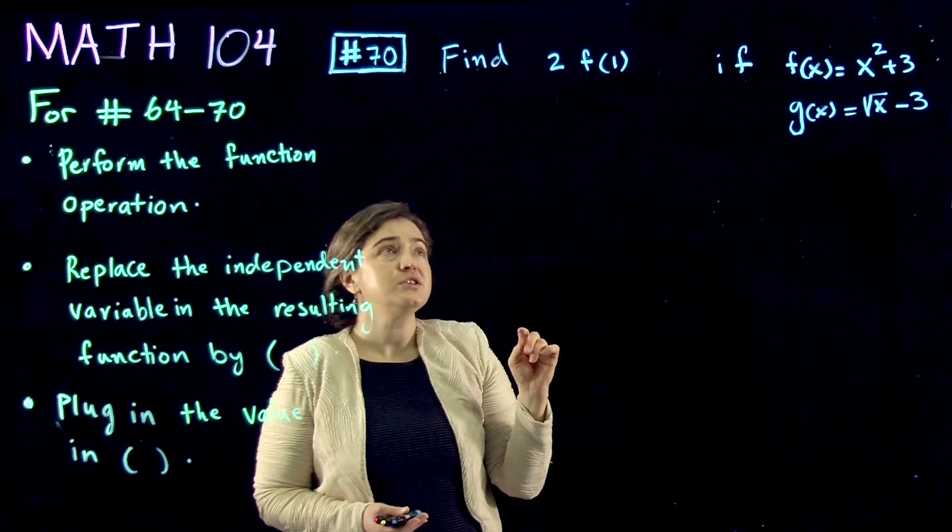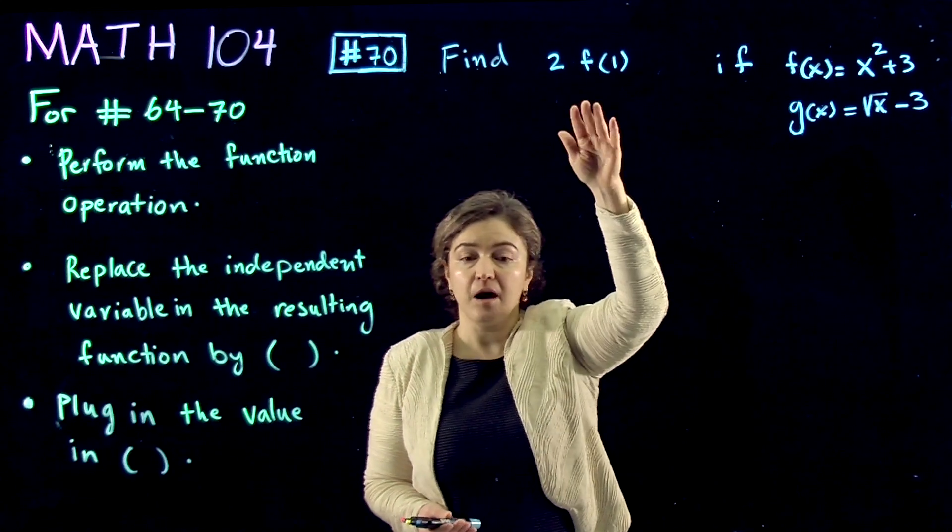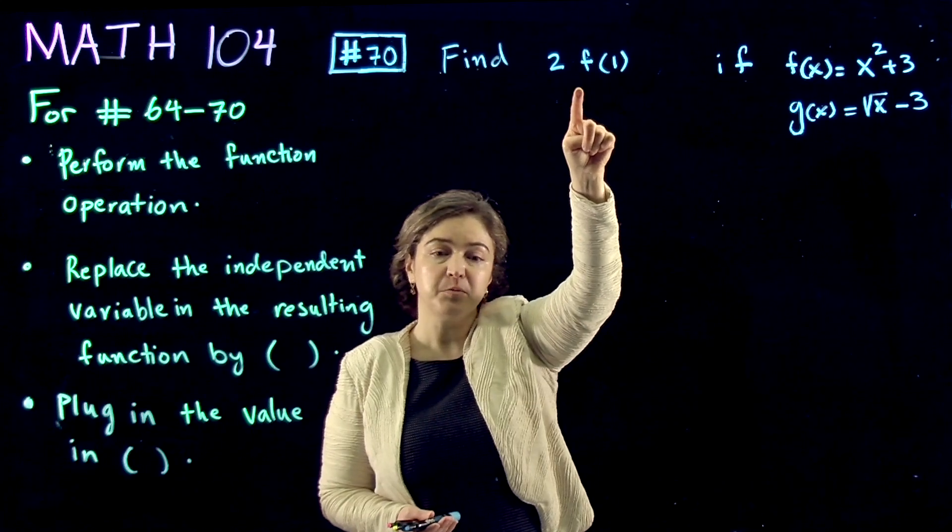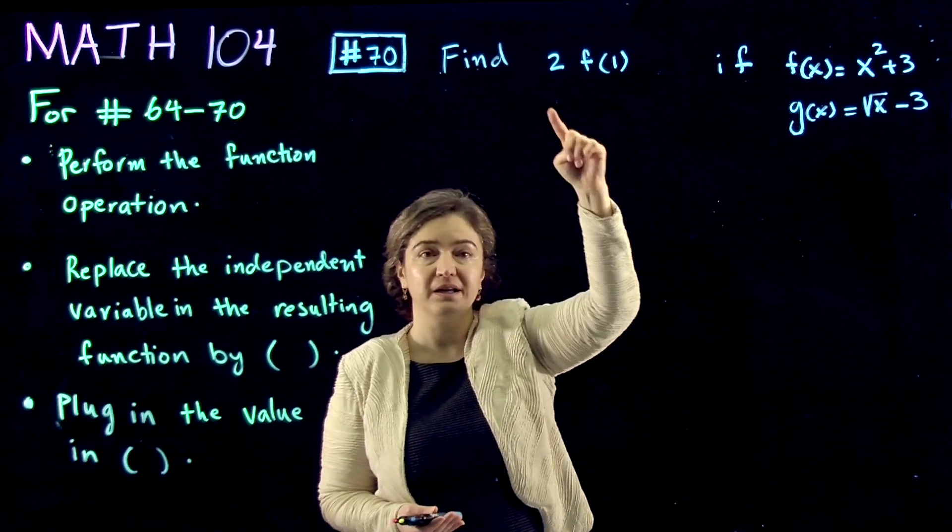The first step is to identify the operation. The operation is 2 times f, multiplying a function by a constant.